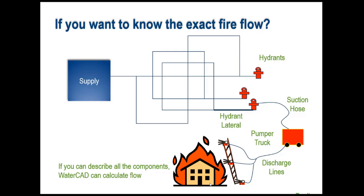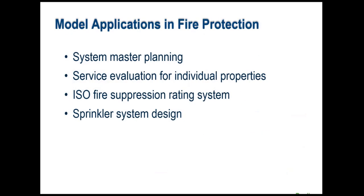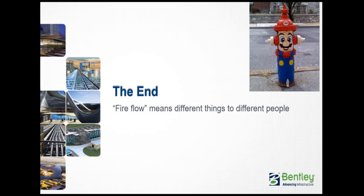In summary, we've talked about four different kinds of fire protection applications: system master planning studies, service evaluation for individual properties, the fire suppression rating system, and sprinkler system design. These are four different ways that fire protection enters into hydraulic analysis of water distribution systems. Remember that 'ISO' here refers to the Insurance Service Office, not the International Organization for Standards — which sometimes causes confusion. Fire flows mean different things to different people, and hopefully this will help you do the right things when answering requests about fire flow and improving systems to give a good level of fire protection.